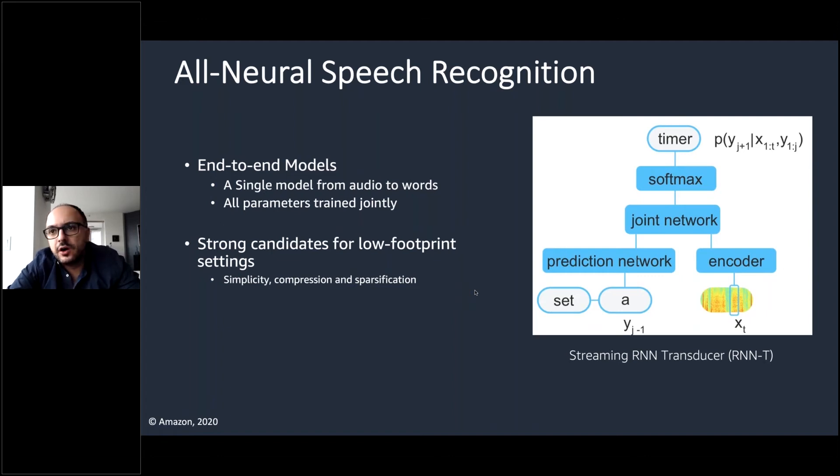Basically, all neural speech recognitions are in the form of end-to-end models. You have a single model that is capable of translating audio directly to words without the split and breakdown that we have in a conventional system between lexicon, language model, and acoustic models. The benefit of such system is that you can train all the parameters of the system jointly and in one shot using data. And due to this joint training and the fact that the whole network is serialized and represented as one network, this lends itself to a strong candidate for low footprint settings because you can apply uniform compression and sparsification techniques to basically shrink down the footprint of the system and make it available to low footprint and constraint scenarios.